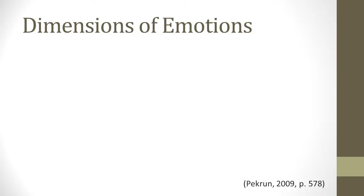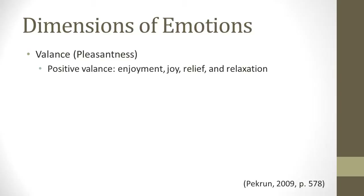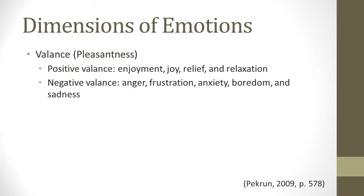Now I want to take a look at the different types of emotions. Researchers have tried to classify emotions in different ways, and some ways might be more useful than others. In one classification, two dimensions have been used to classify emotions: valence and activation. Valence can either be positive or negative, depending on how pleasant the emotion is, with positive valence including pleasant emotions such as enjoyment, joy, relief, and relaxation. Negative valence includes unpleasant emotions